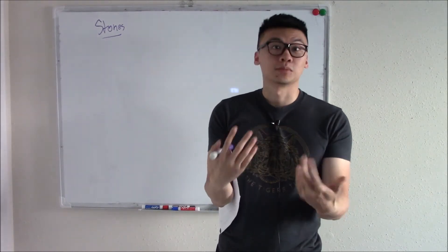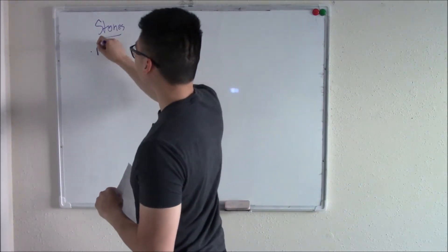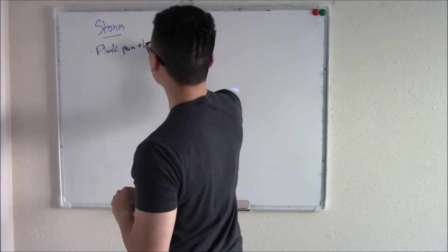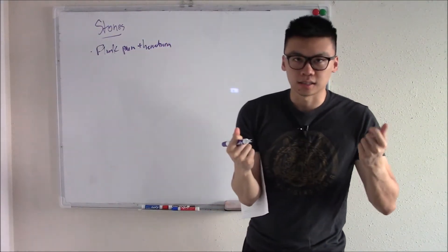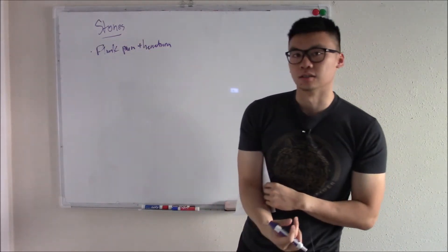How would it present? What are some symptoms? It's going to hurt, so you'll have flank pain. And commonly you'll have hematuria. So someone with sudden onset of flank pain and hematuria, one of your differentials has to be a kidney stone.